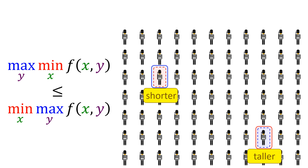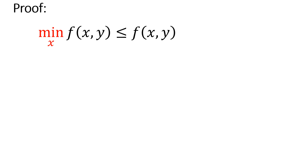We can generalize our observation to the minimax theorem: the max of the min of the function is always less than or equal to the min of the max of the function. Proof: the min of a function is always less than or equal to the function itself.